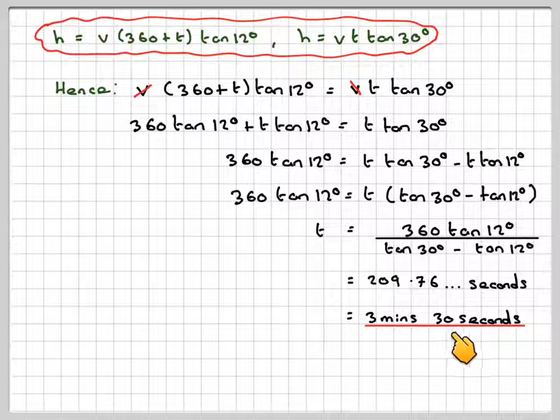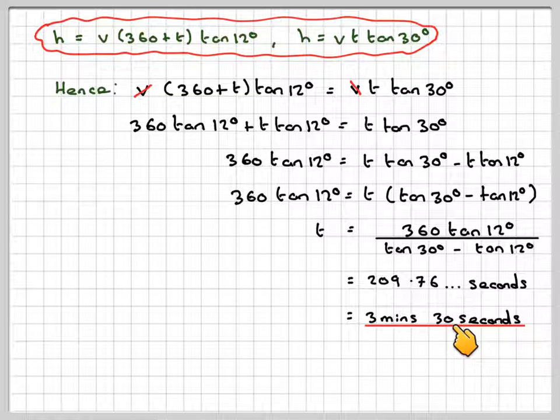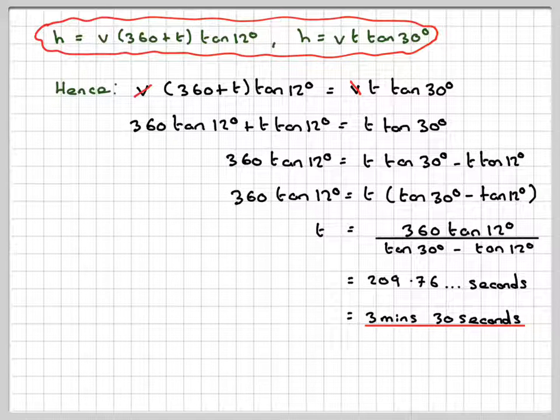You need to multiply by 60 to get 30 seconds. It gives you 29.7, so since it says give it to the nearest second, it's going to take three minutes and 30 seconds more to reach the bridge.